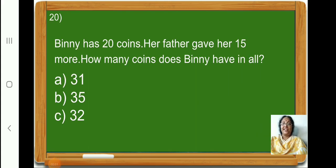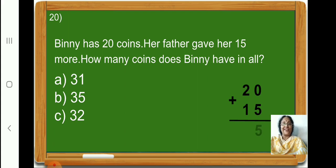Children, Binny has 20 coins. Her father gave her 15 more. How many coins does Binny have in all? Children, in your rough book, write down 20 plus 15. First let us add the numbers in the 1's place. 0 plus 5 is 5. Now, let us add the numbers in the 10's place. 2 plus 1 is 3. Therefore, 20 plus 15 is equal to 35. In all, Binny has 35 coins. So, let us put a tick on option B, 35.